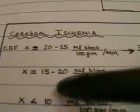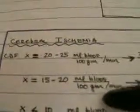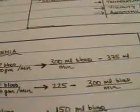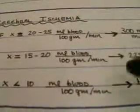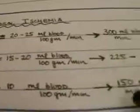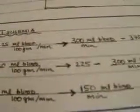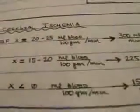The EEG generally shows signs of ischemia or an isoelectric flatline when the cerebral blood flow is approximately 225 to 300 mL of blood per minute. If the cerebral blood flow falls below 10 mL for every 100 grams of brain tissue per minute, which equates to less than 150 mL of blood per minute, the brain will suffer irreversible damage and permanent neurological dysfunction.